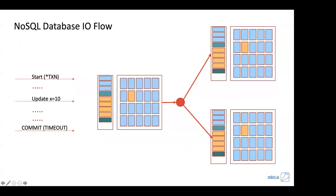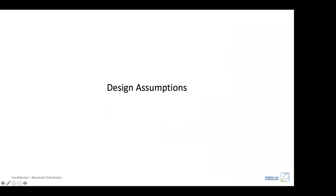In a NoSQL database the flow is slightly more challenging since some distributed databases do not offer full transaction semantics. The primary records changes in its commit log, which are transferred to replicas. When there's a commit, a flush happens — almost similar behavior to SQL databases. Changes are applied to the transaction log first, then periodically flushed to data blocks.